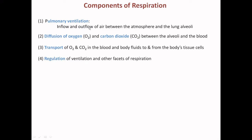So to recap: the first component is pulmonary ventilation, the exchange of atmospheric gases with the alveolar gases. Next is diffusion in the alveoli of oxygen and CO2 between the alveolar air and the blood. Then the transport of O2 and CO2 between the respiratory epithelium of the lungs and the tissues where CO2 is generated or O2 is used, and the regulation of this entire process of ventilation and further phases of respiration.